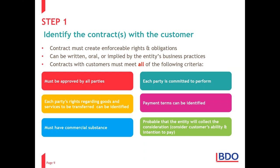This links back to the standard setter's overall objective: we do not overstate revenue. Rather than booking revenue of, say, $1 million and then lower down having a bad debts expense, they say if it's not probable that you can collect the consideration, don't book the revenue in the first place. We shouldn't book the revenue until it's probable. Only if it's probable do we book it. If circumstances change later and the amount is not collectible, that's a provision for bad debts — but before you book revenue, there's an explicit requirement to consider whether it's probable we'll collect it.